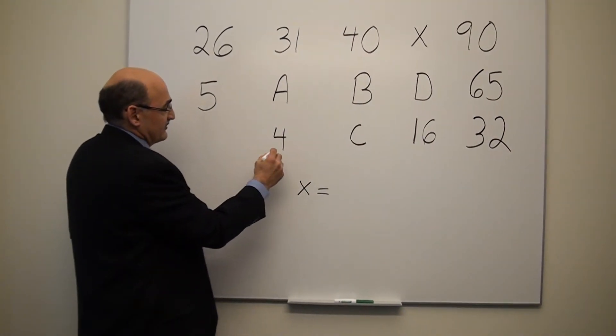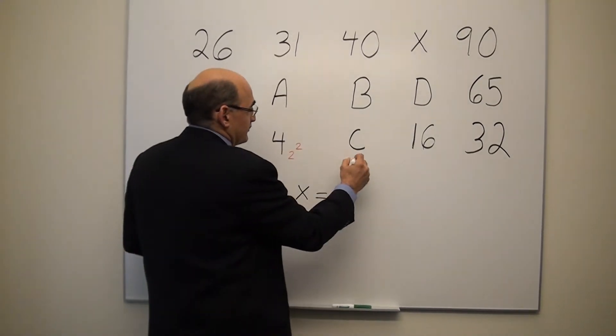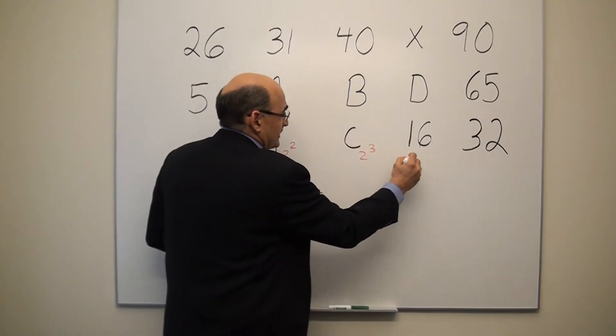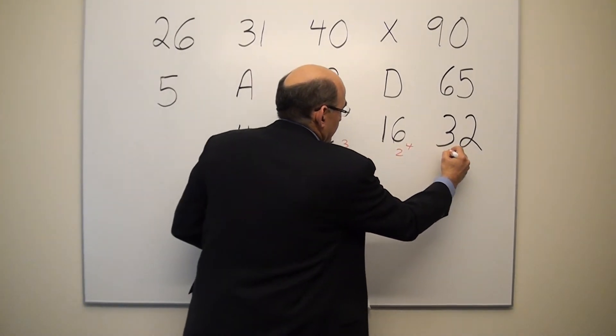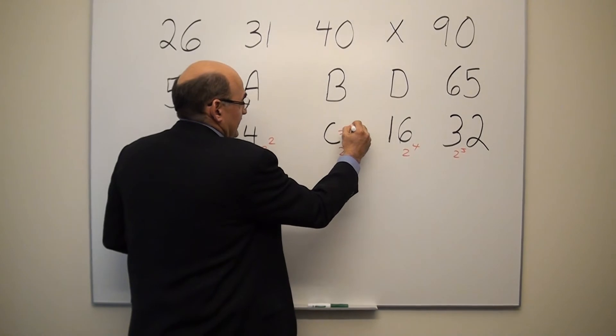You can realize this is a geometric sequence, so 4 is 2 to the power of 2, that equals 4. You have 2 to the power of 3, 2 to the power of 4, 2 to the power of 5. So c here is 8.